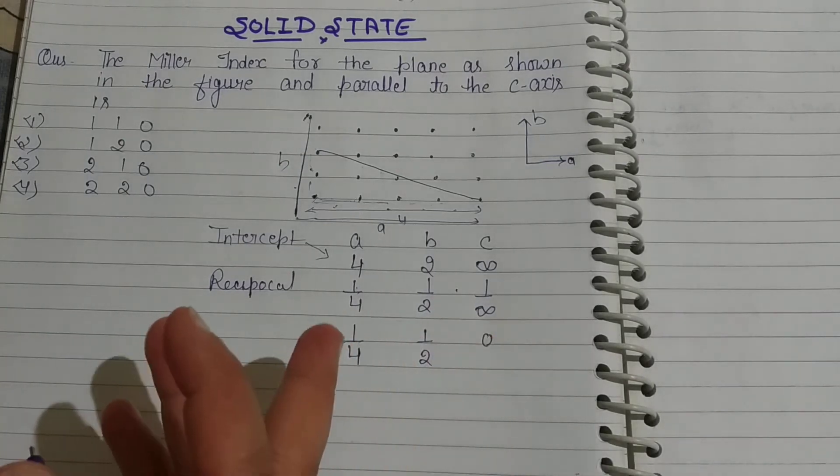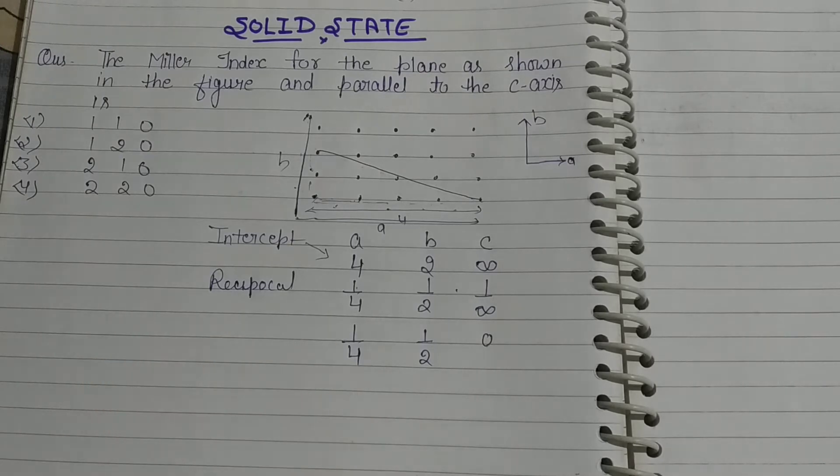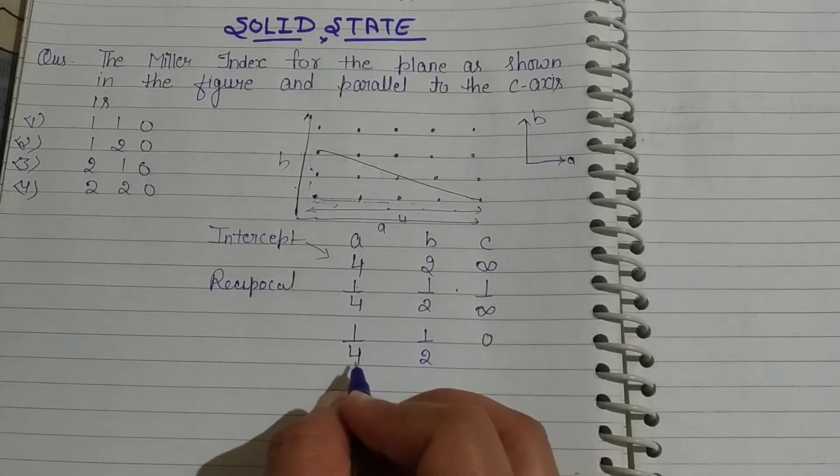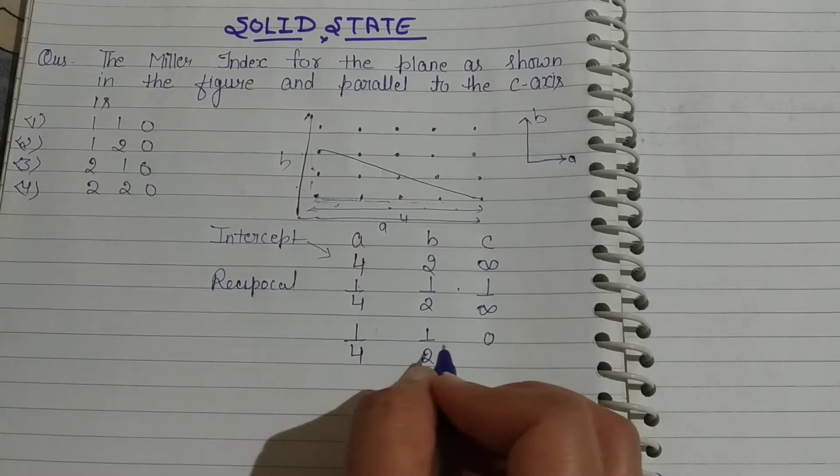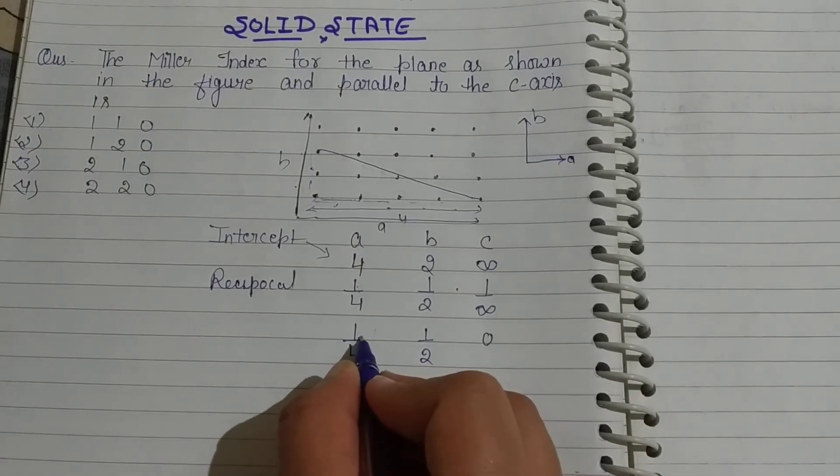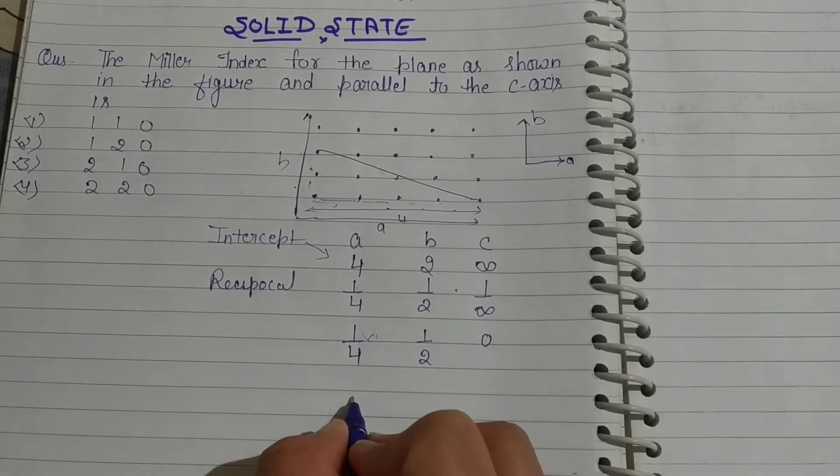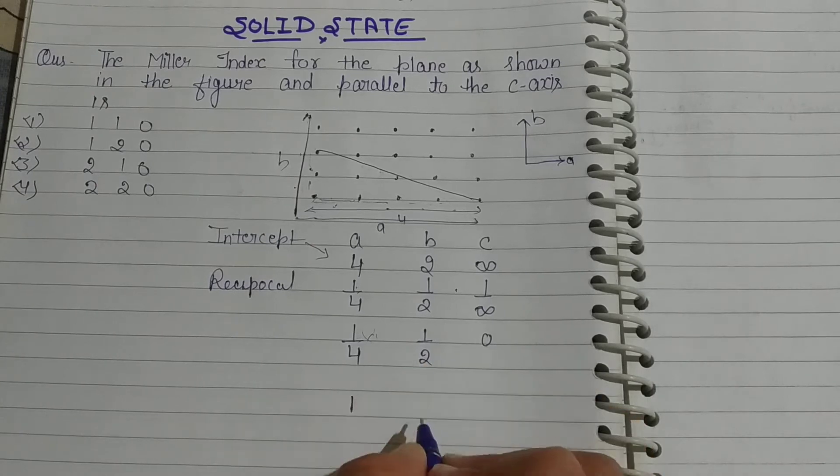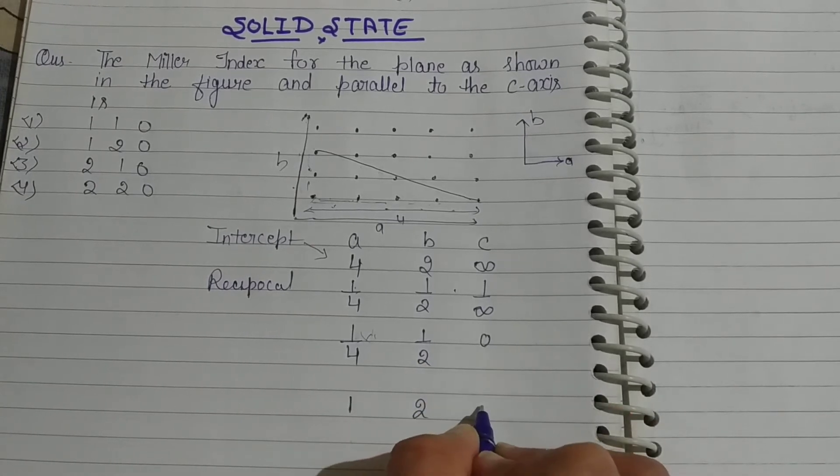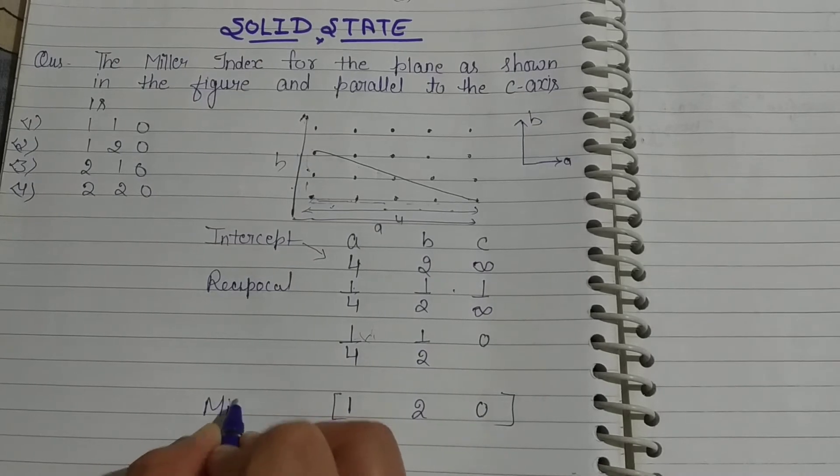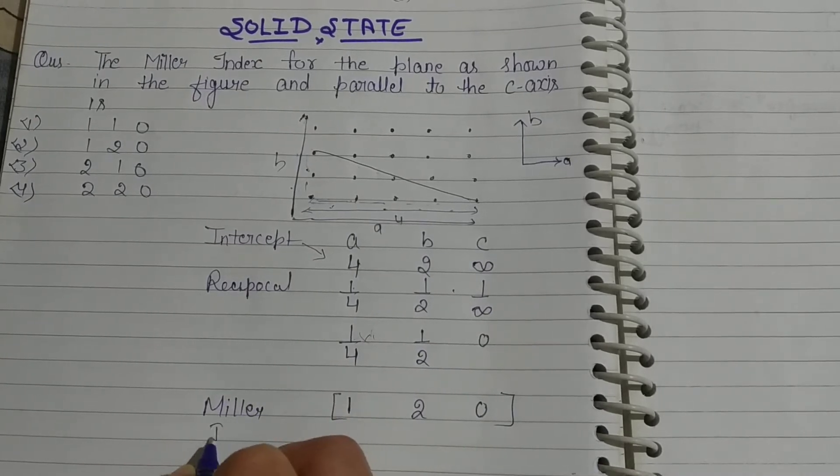Then what do we do with this? For Miller Indices we have to write integers in the form of integers. So if I have to simplify this, what do I have to do? Multiply by 4. 1/4 with 4 cancels. So what are our Miller Indices? Miller Indices: 1, 2, 0.